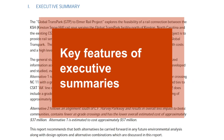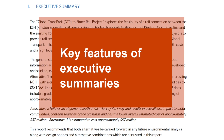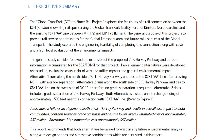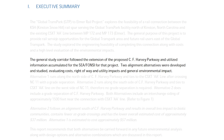An executive summary has several key features that distinguish it from other kinds of technical writing. First, it is a condensed statement of the main points of the report, usually one page long. Second, it is written using plain language — clear, accessible words and short sentence structures for non-engineers to understand.